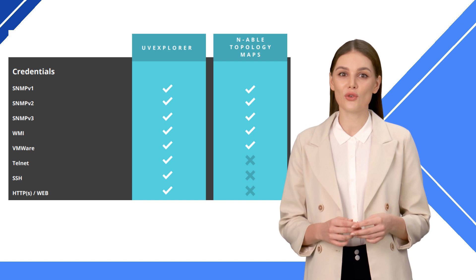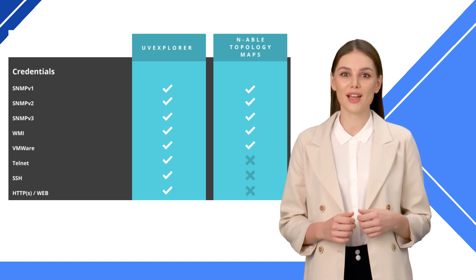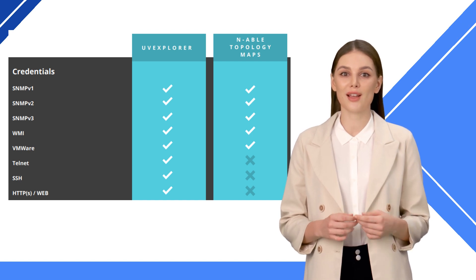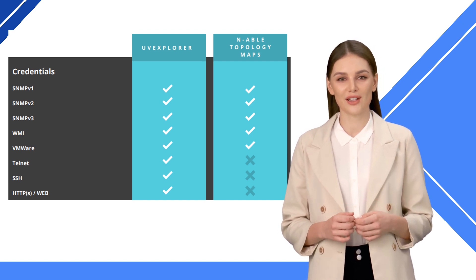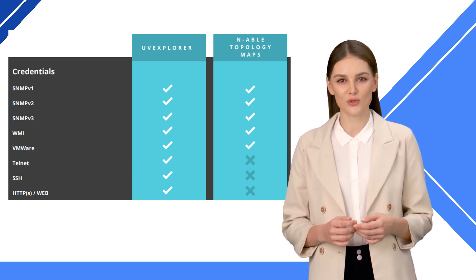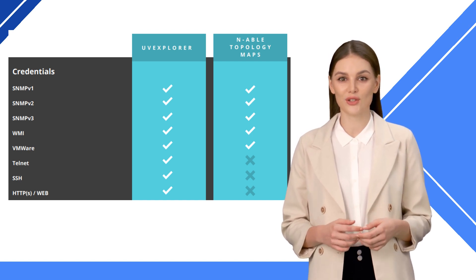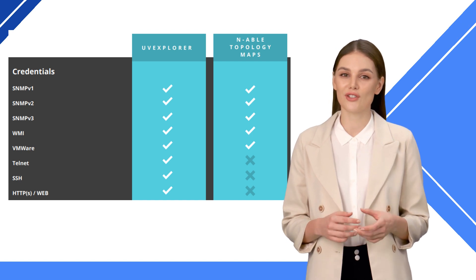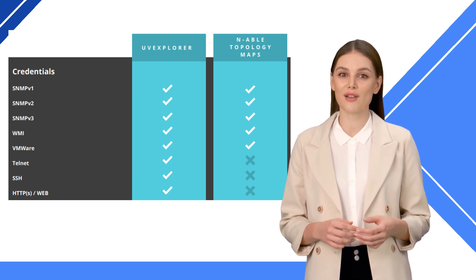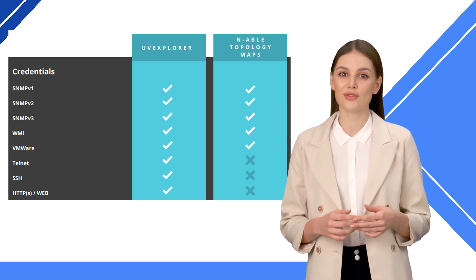Both network mapping tools incorporate SNMP, WMI, and VMware in their discovery. UV Explorer also includes SSH, Telnet, and HTML-based credentials.